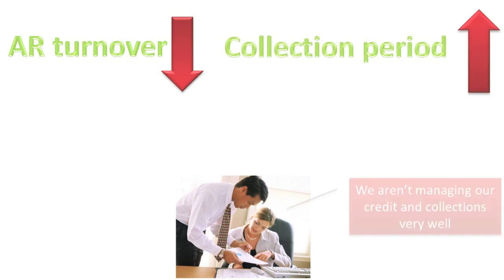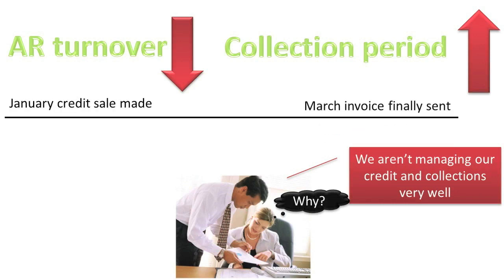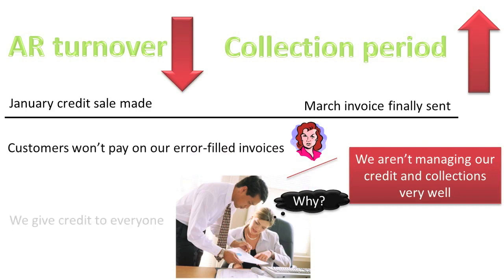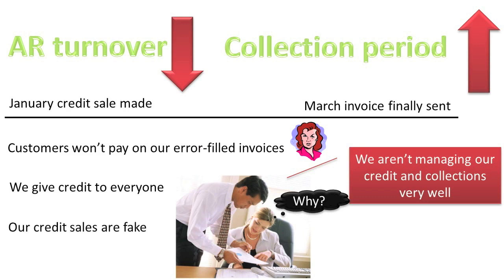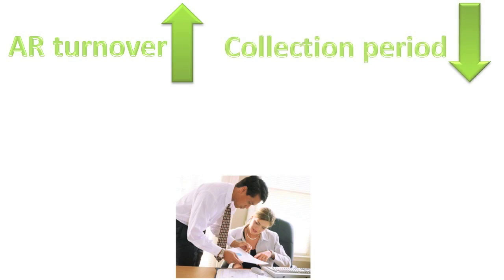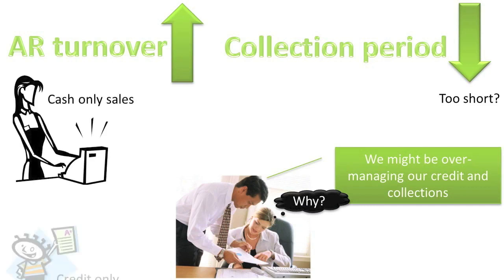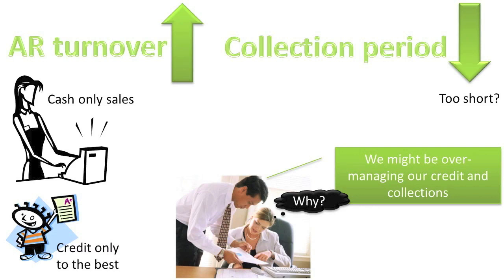In general, a low AR Turnover Ratio and a long AR collection period is a sign of poor credit and collection management, possibly indicating management takes too long to bill its customers, management does not catch billing errors, management is overly lenient and grants credit to persons who are unable to pay, or management records fictitious fraudulent credit sales. In general, a high turnover ratio and a short collection period is a sign of good credit and collection management. However, a collection period that is too short can actually be a sign of poor credit and collection management that can significantly reduce sales, such as management only allows cash sales or management only grants credit to AAA-rated customers, thus preventing credit sales to customers who really would pay if given time to pay.